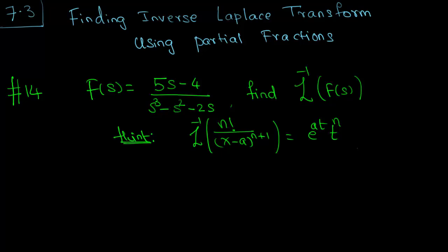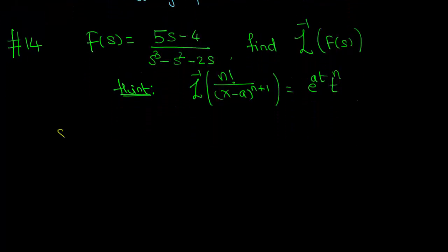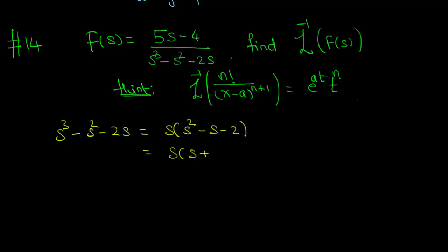Let us first factorize s cubed minus s squared minus 2s. This is s times (s squared minus s minus 2), which is s times (s plus 1) times (s minus 2).